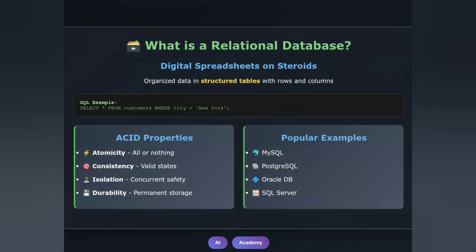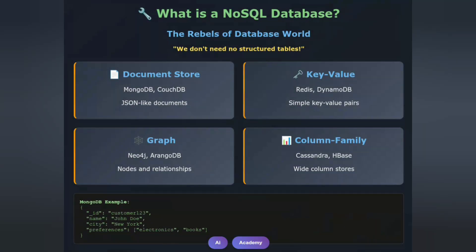You interact with them using SQL, structured query language. For example, finding all customers from New York would look like this. The beauty of relational databases lies in their structured nature and powerful joins, but this rigidity can also be their limitation.